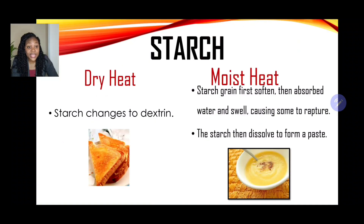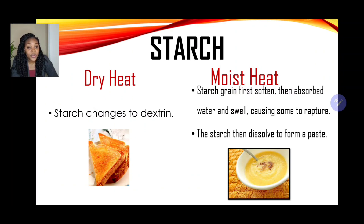Now let's look at the effects of dry heat and moist heat on starch. With dry heat, starch changes to dextrin — the process of dextrinization. An example of this is toasted bread. With moist heat on starch — when making porridges and sauces — the starch grains first soften, then absorb water and swell, causing some to rupture. When the starch grain ruptures, it becomes a sticky paste, it becomes thick, and that is the process of gelatinization.